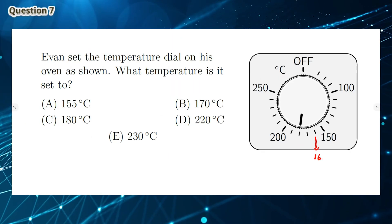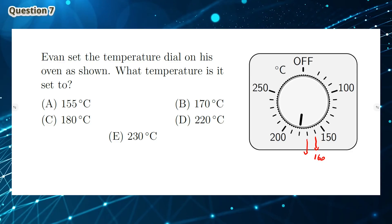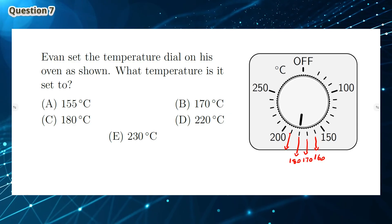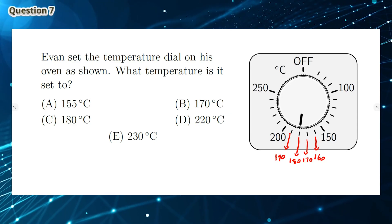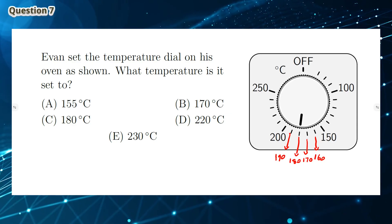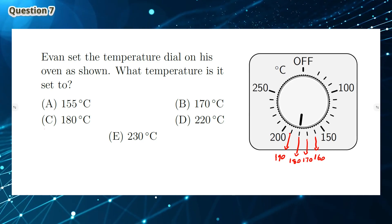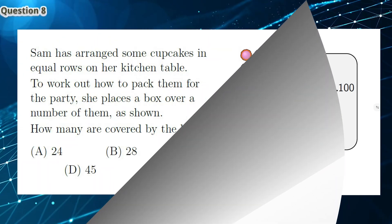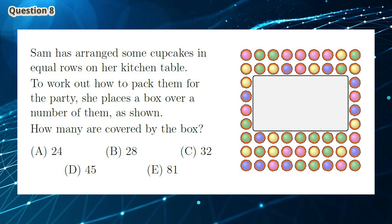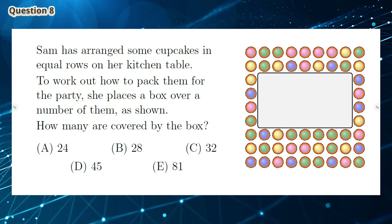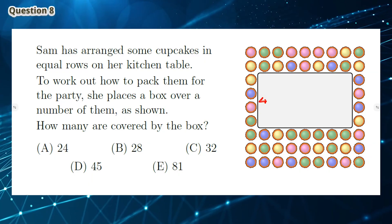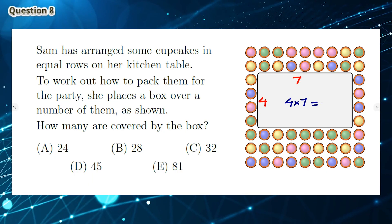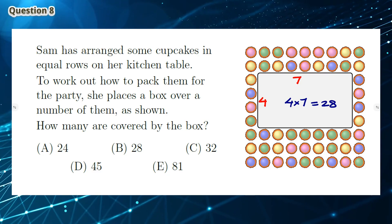Question 7: Looking at the diagram, we can see that there are 5 increments of 10 between 115 and 100. The temperature is set on the third increment, which is 180 degrees. This means the answer is C. Question 8: The box has dimensions of a length of 7 cupcakes and width of 4 cupcakes. 7 times 4 is 28 cupcakes. This means the answer is B.